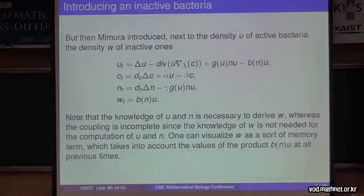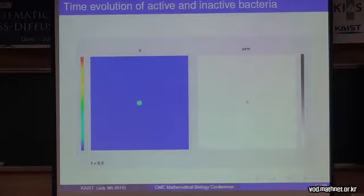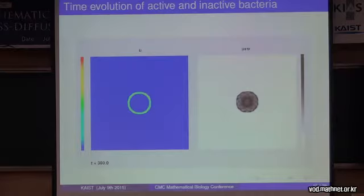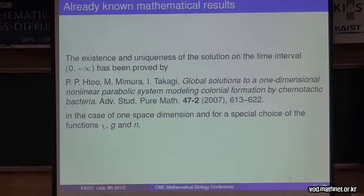In order to visualize what is w, in fact, it is memory. It is memory of what happened with the term b times nu at all previous times. Here you have numerical pictures. On the one hand, you have u at time close to zero, and on the other hand, you have u plus w. They evolve: u has a ring and gets empty inside the ring, and u plus w gets a well-known pattern.